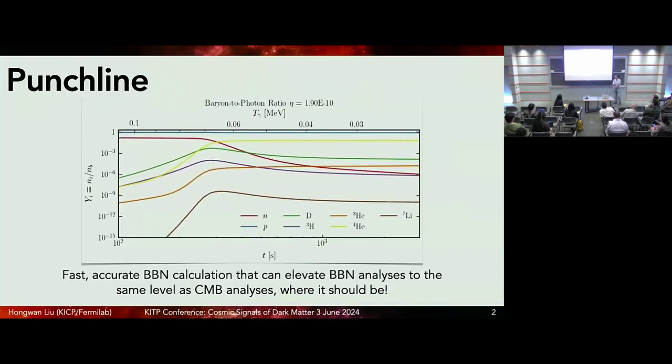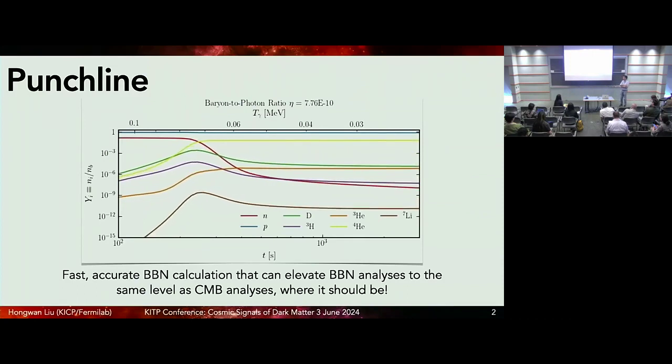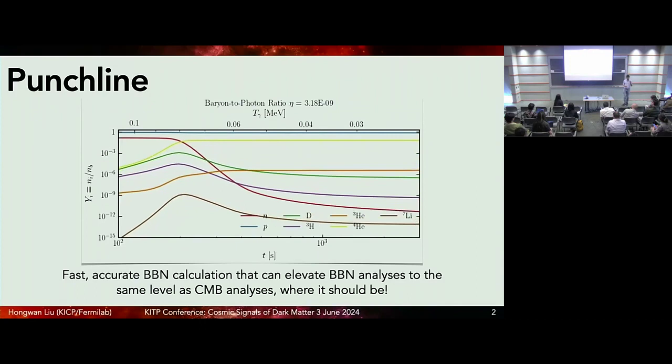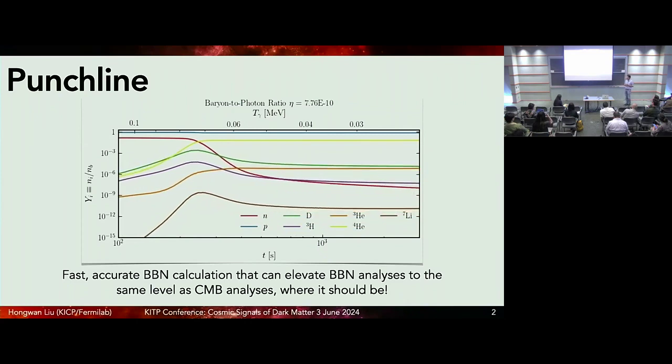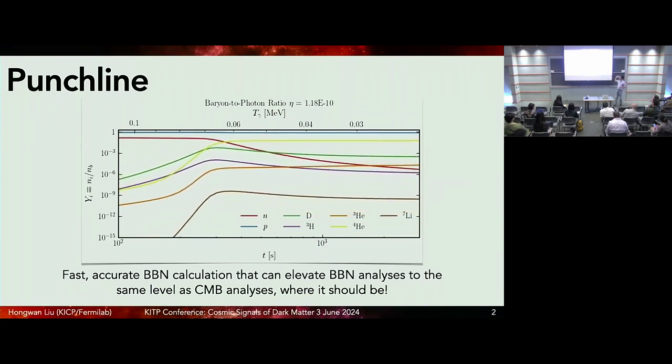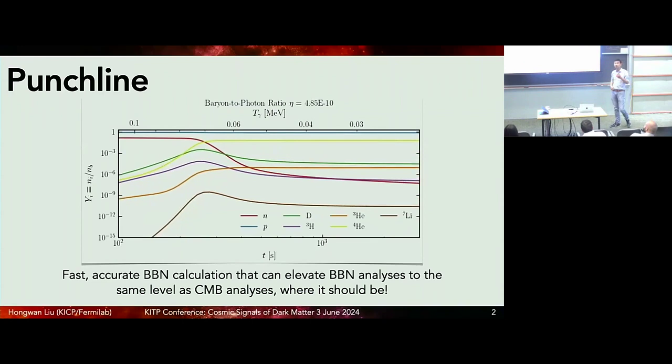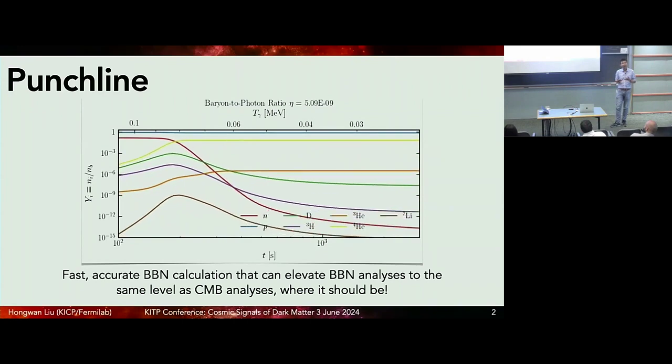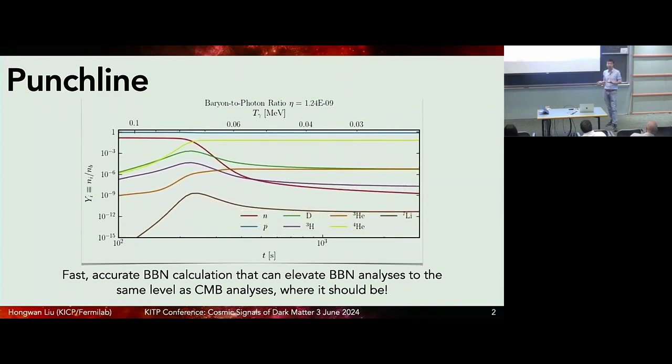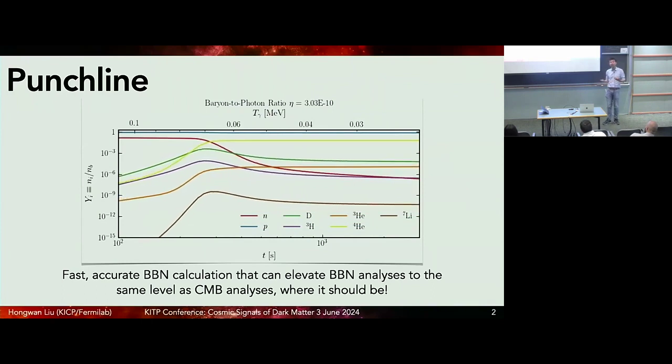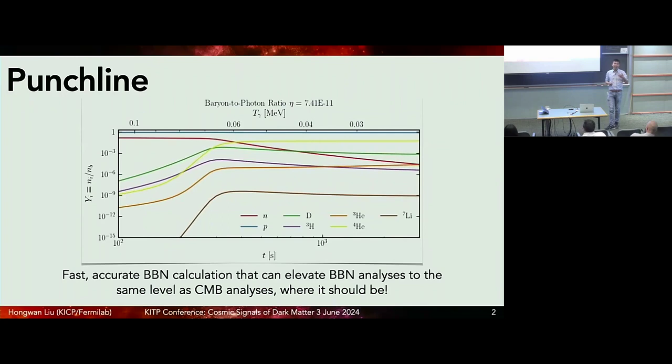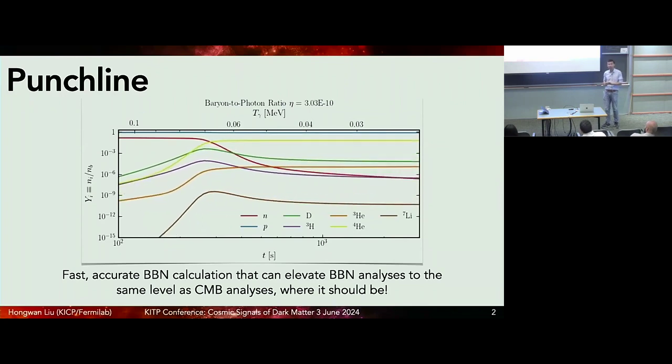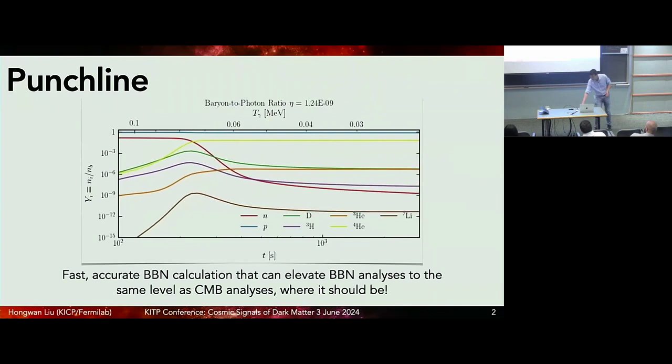What's the punchline? We have written a code where you can do accurate BBN calculation, which is something that people can already do. But the most important thing is that we can do it quickly. And because we can do it quickly, we can do calculations of all of the various abundances of these elements really quickly. Based on this, we can elevate any kind of analysis involving BBN, Big Bang Nucleosynthesis, to be on the same level as what you have come to expect from a cosmic microwave background analysis, where you can do very sophisticated Bayesian statistical techniques to infer various parameters, add new physics, and so on. You can now do the same thing with BBN with our code. That's the punchline.